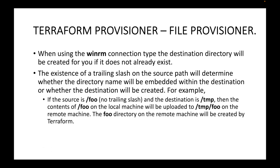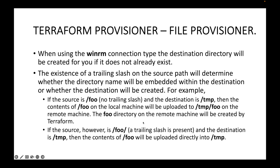The existence of a trailing slash on the source path determines whether the directory name will be embedded within the destination. For example, if the source is /foo (no trailing slash) and destination is /tmp, the contents of /foo on the local machine will be uploaded to /tmp/foo on the remote machine — the foo directory is created by Terraform. If you use a trailing slash on the source, only the contents of the folder are copied directly into /tmp, without creating the foo subdirectory.